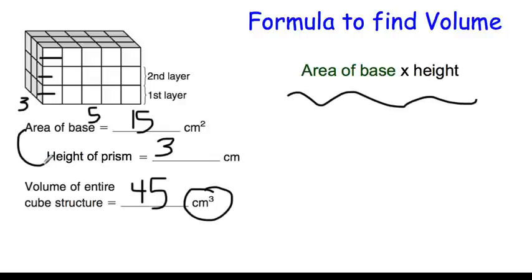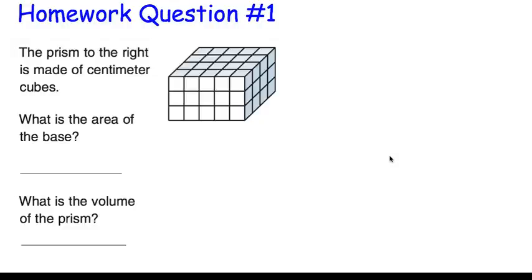Fifth graders, another option is if you didn't want to do your 3 times 5 on the bottom, you could count the top, because the top is also a base — anything that the shape can sit on. You can see that there are 15 squares on the top, then just multiply that by the 1, 2, 3 layers. Here's homework question 1 — record your answer in your notebook and on the Google form. The prism shown is made of centimeter cubes: find the area of the base, find the height, and submit the volume of the prism.